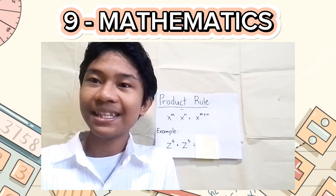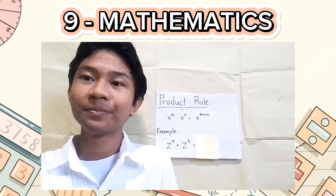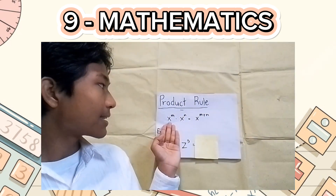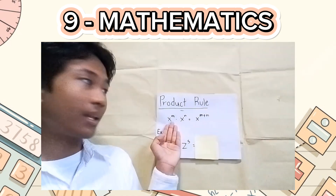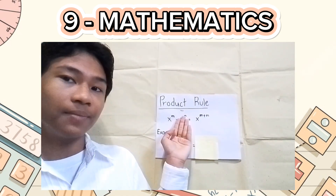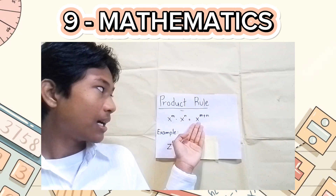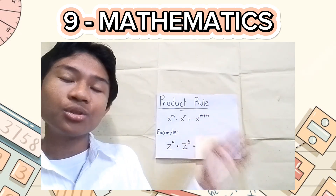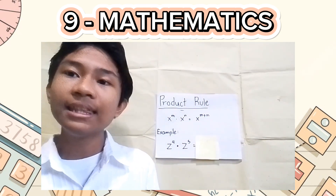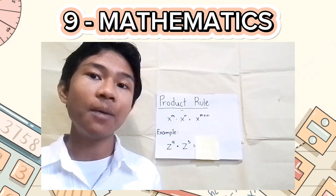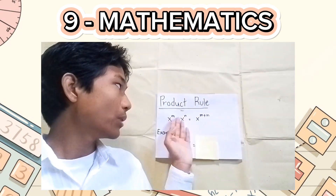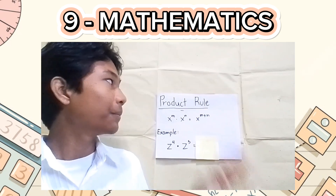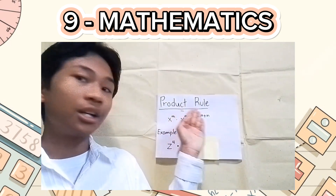Starting off easy, here we have the product rule. Here we have x raised to m times x raised to n is equal to x raised to m plus n. In this law, we will simply just add up the exponents of the same variable, hence the name of this law, the product rule.